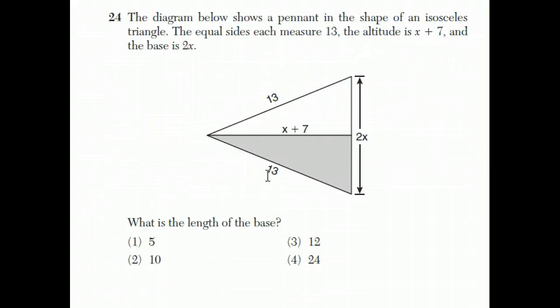Question 24. The diagram below shows a pennant, which is like a flag, in the shape of an isosceles triangle. The equal sides each measure 13. The altitude is x plus 7, and the base is 2x. What's the actual length of the base?